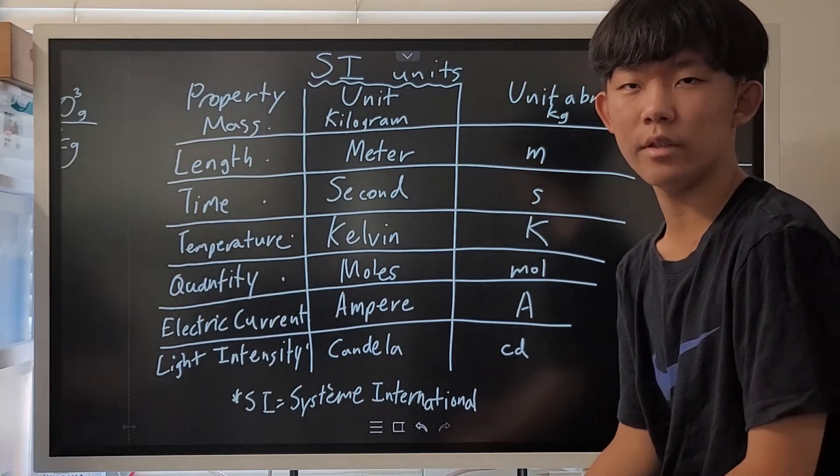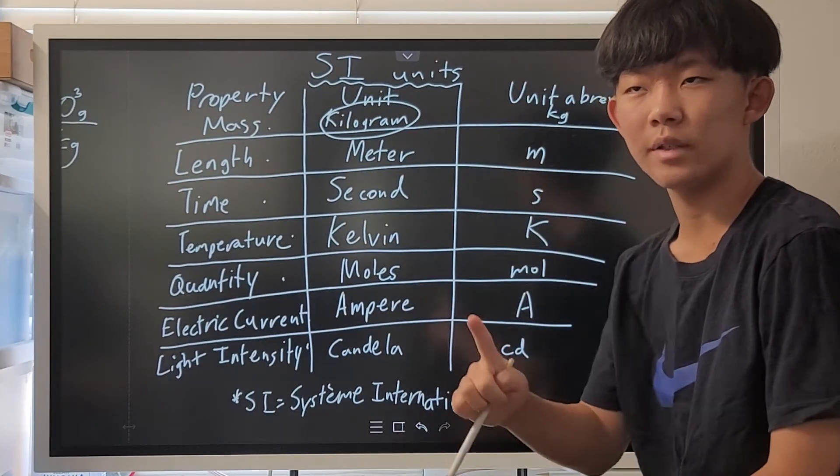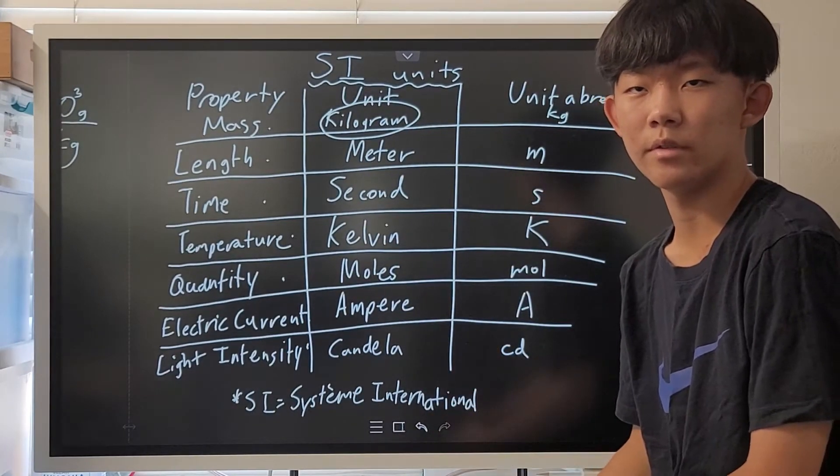The only SI unit that has a prefix for it is kilogram because one gram is simply too small for too many things.